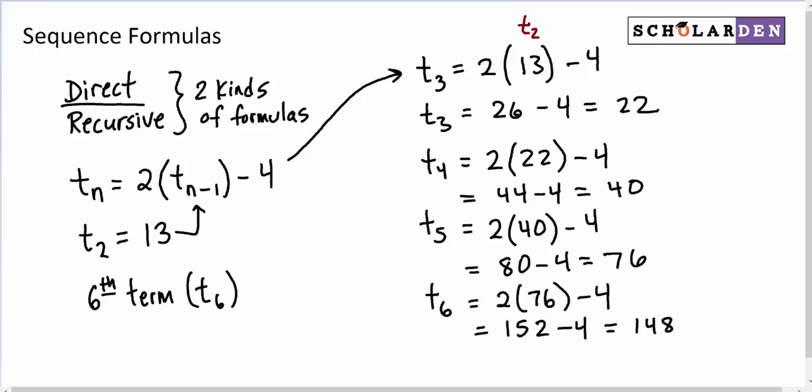So a sequence is a list of numbers or terms. There are formulas for finding those terms or numbers. A direct formula allows us to substitute the term number in. A recursive formula requires us to substitute the term before any given term in. And the recursive formula also requires that we are given one of the terms also. Okay. I hope that was helpful, and I'll see you in the next video.